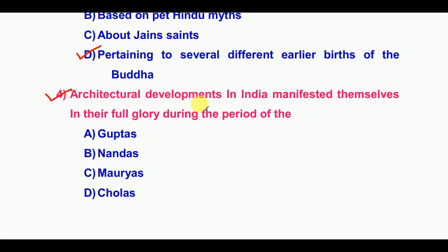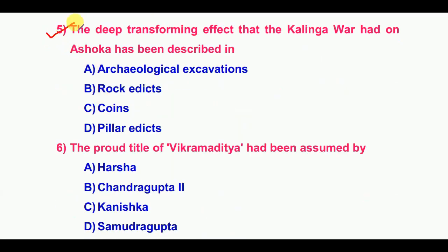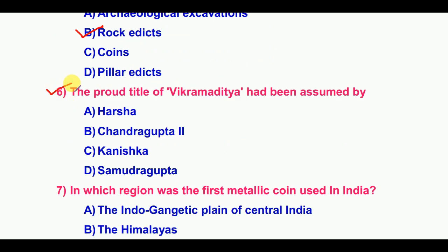Architectural developments in India manifested themselves in their full glory during the period of the Guptas. The deep transforming effect that the Kalinga war had on Ashoka has been described in the Rock Edicts. The proud title of Vikramaditya has been assumed by Chandragupta II.